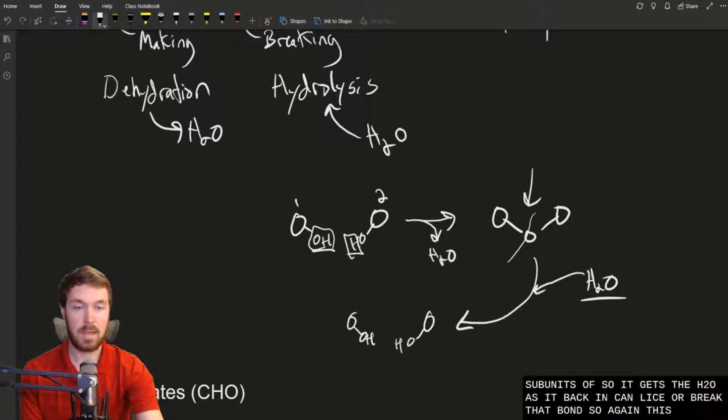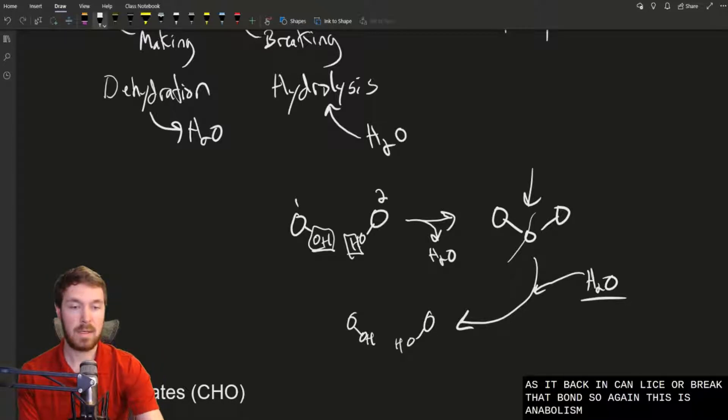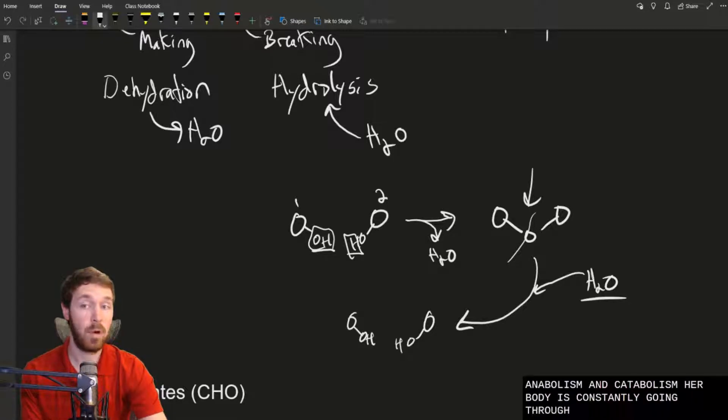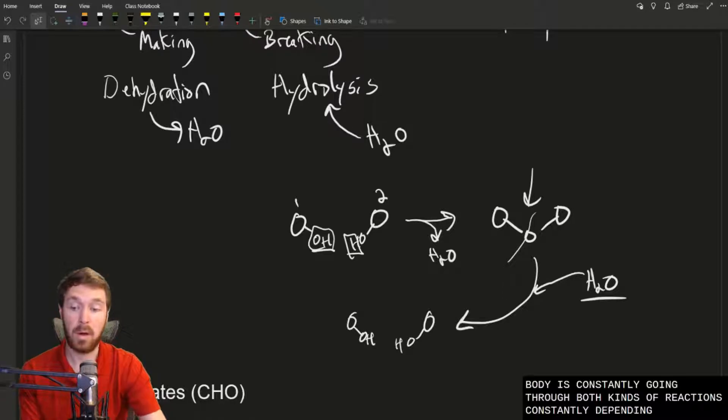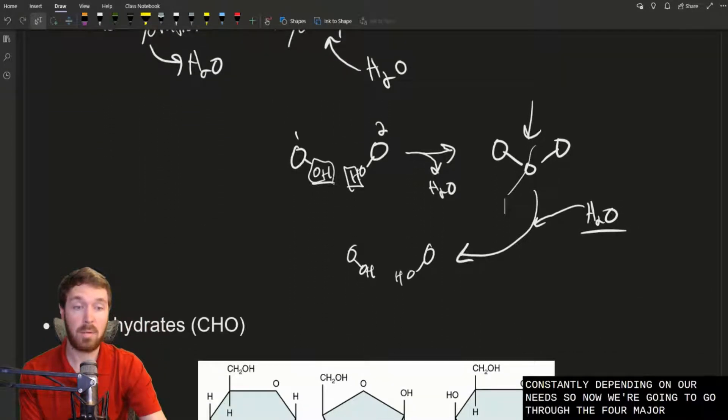But now we want to break it and go backwards and separate it again. We have to have the input of water coming in, and then we can separate it back into the individual subunits again. So it gets the H2O, adds it back, and can lyse or break that bond. This is anabolism and this is catabolism. Our body is constantly going through both kinds of reactions, constantly depending on our needs.